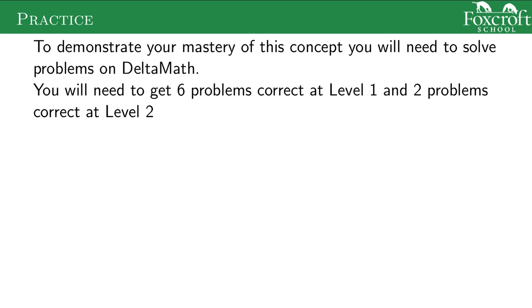For this one, you're going to demonstrate your mastery by doing practice problems on Delta Math. Delta Math breaks the problems down into levels. You'll have to do more problems at level one, since those are the basic ones with fewer steps. Level two involves more factoring and canceling. Do a few of the level one problems and a few of the level two ones to make sure you understand problems that require factoring quadratics. Get on Delta Math, do those practice problems, and when you've completed them all, you can move on to the next learning objective.